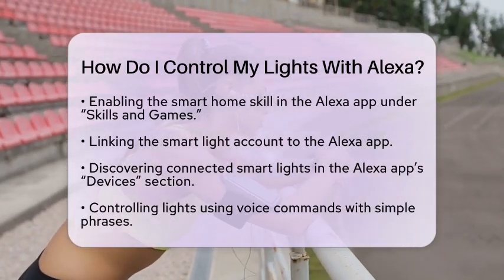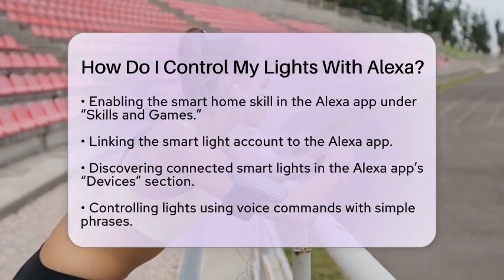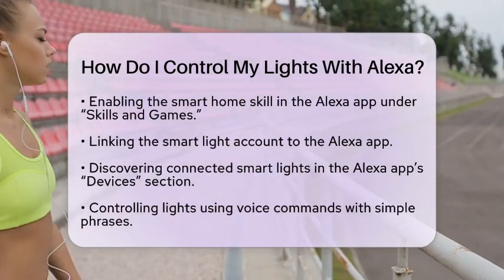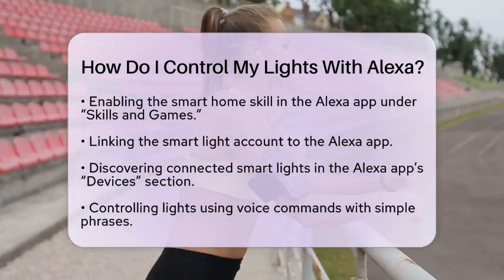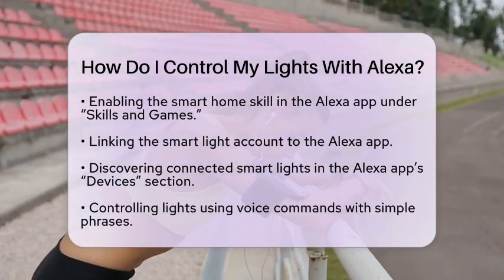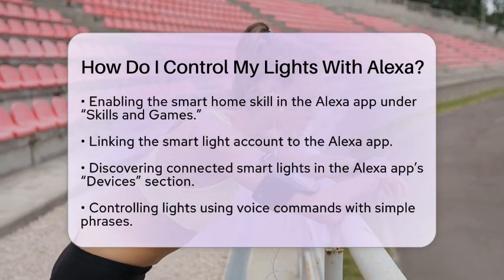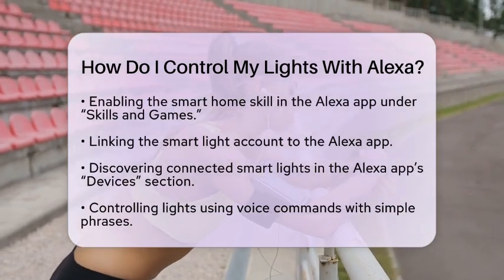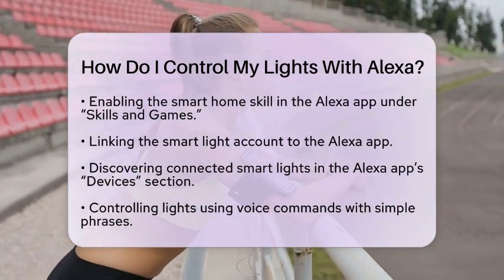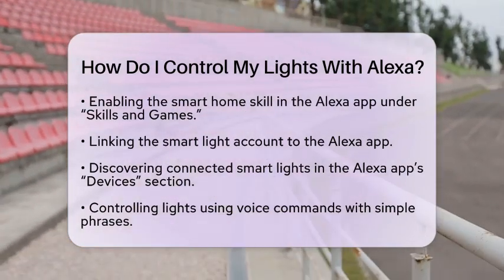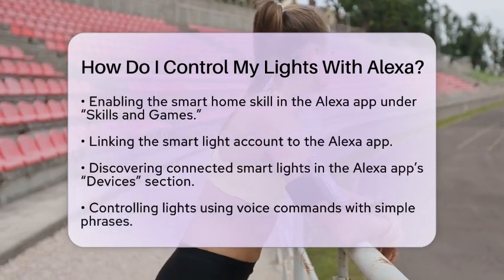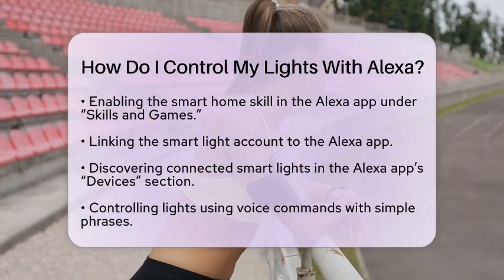Now comes the fun part — controlling your lights with voice commands. You can use simple phrases like 'Alexa, turn on the living room light' or 'Alexa, dim the bedroom lights to 50%.' If your bulbs support color changes, you can say 'Alexa, set the kitchen light to blue.'